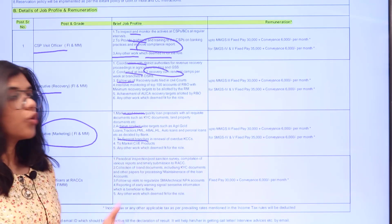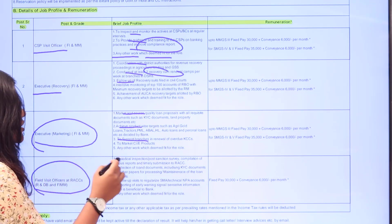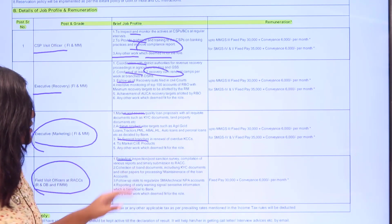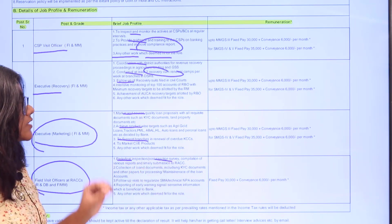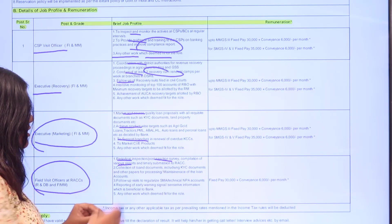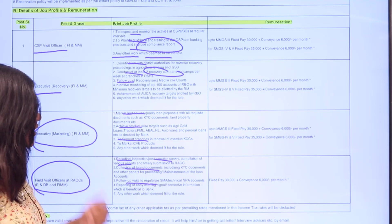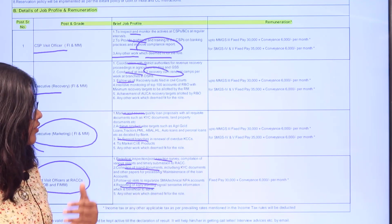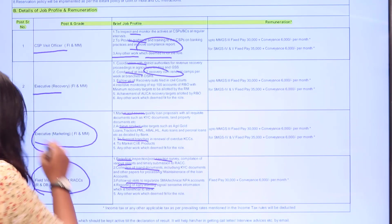For Field Visit Officers, the job description includes periodical inspections, post-sanction surveys, comprehension of various reports and timely submissions, collection of documents, follow-up of visits and regularization, and reporting early warning signals of information.